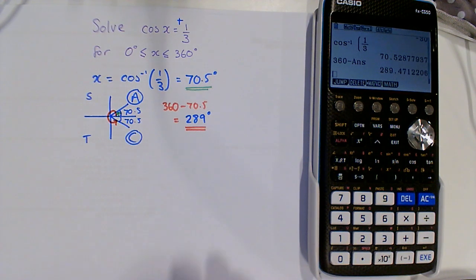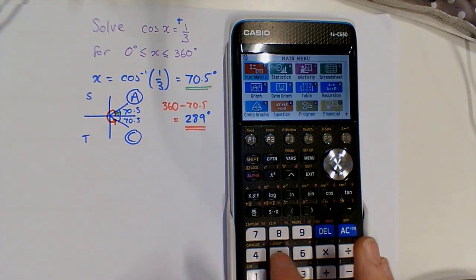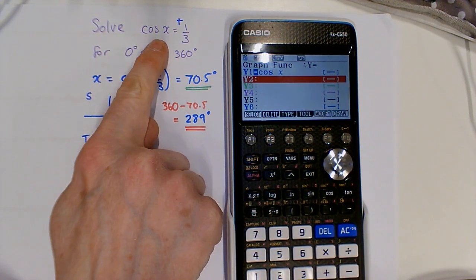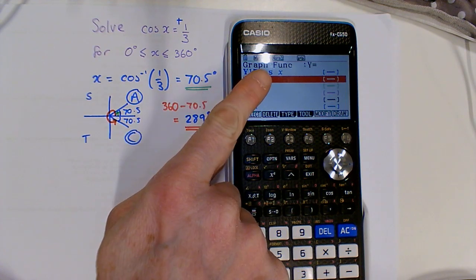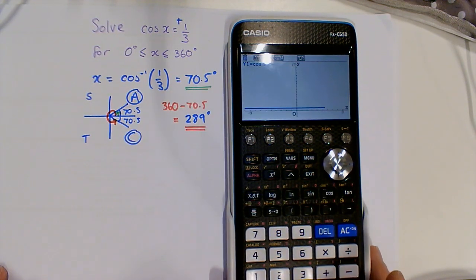I'm going to check that using the graphs on the calculator. Go to the graph menu and type in cos x. We want it to equal one-third, so we're doing y equals cos x and y equals one-third. Then we draw this.